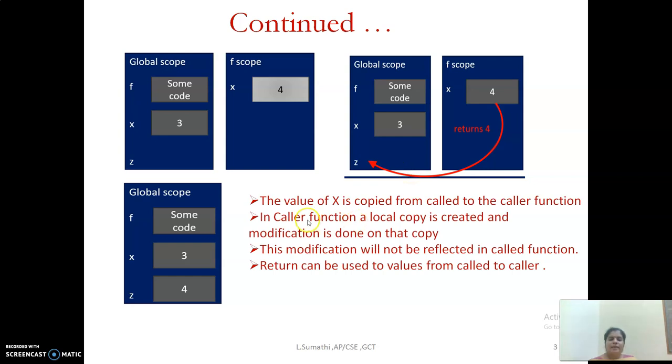So what you are understanding is the value of x is first copied from the called function to the caller function. In the caller function, you have a local copy of x and modification is done on that copy. But this modification is not reflected in the called function. The return value can be used by the caller.